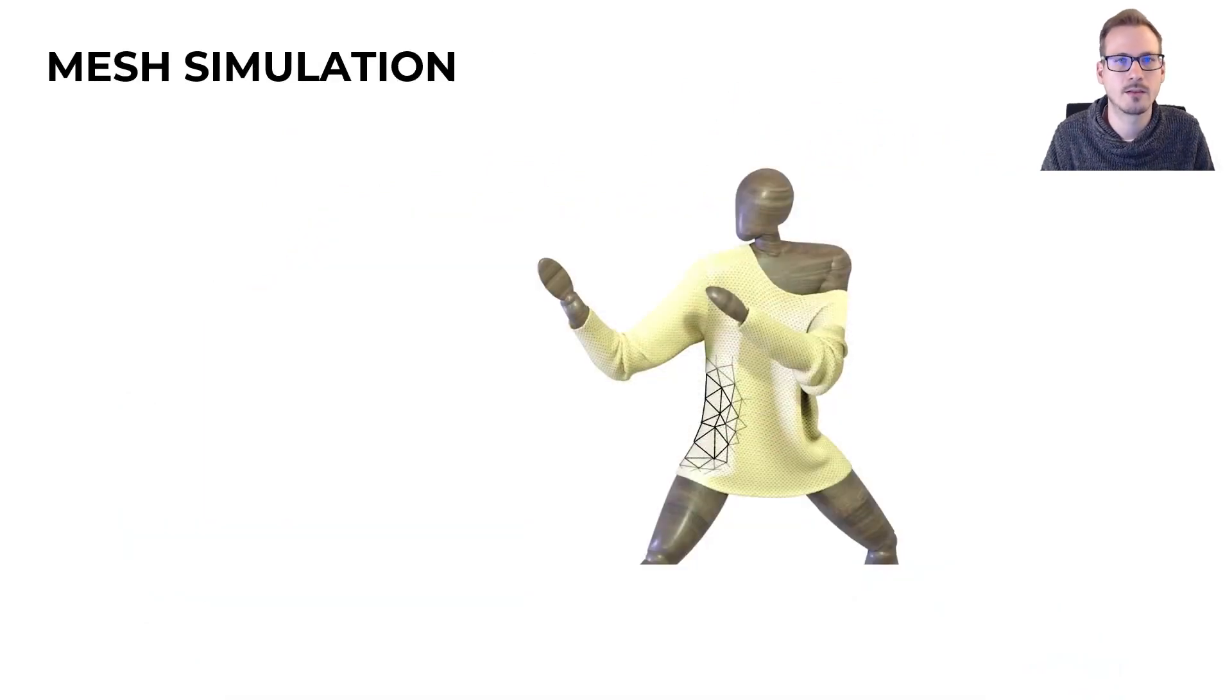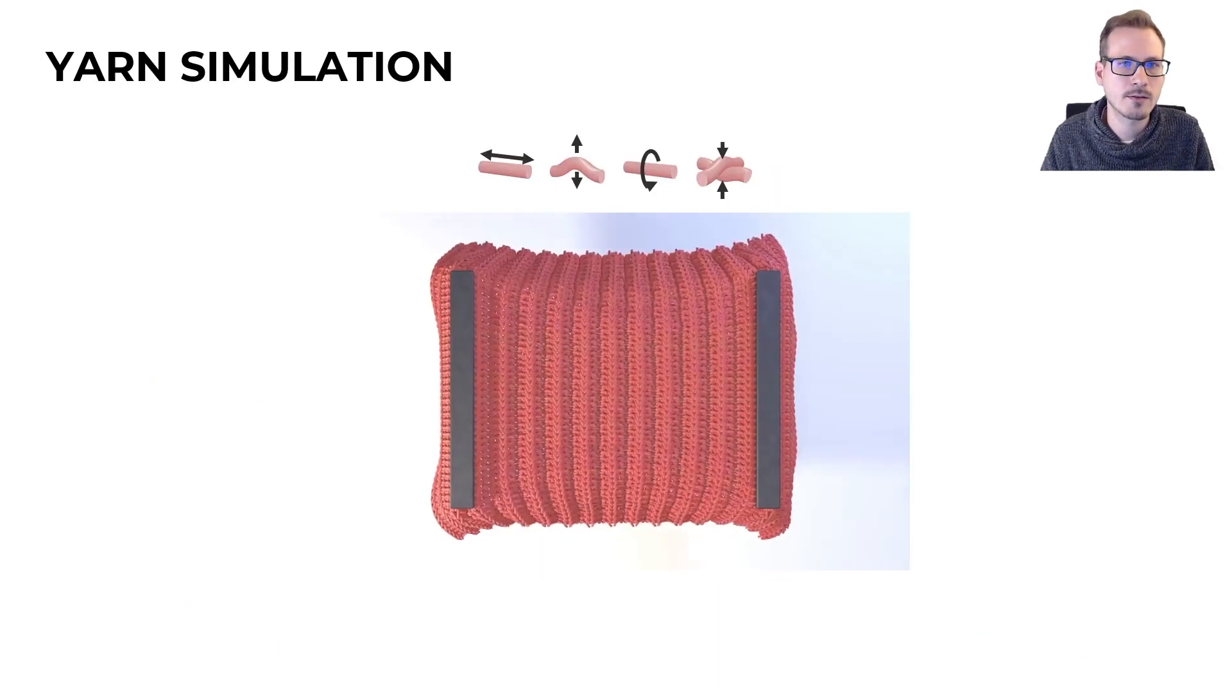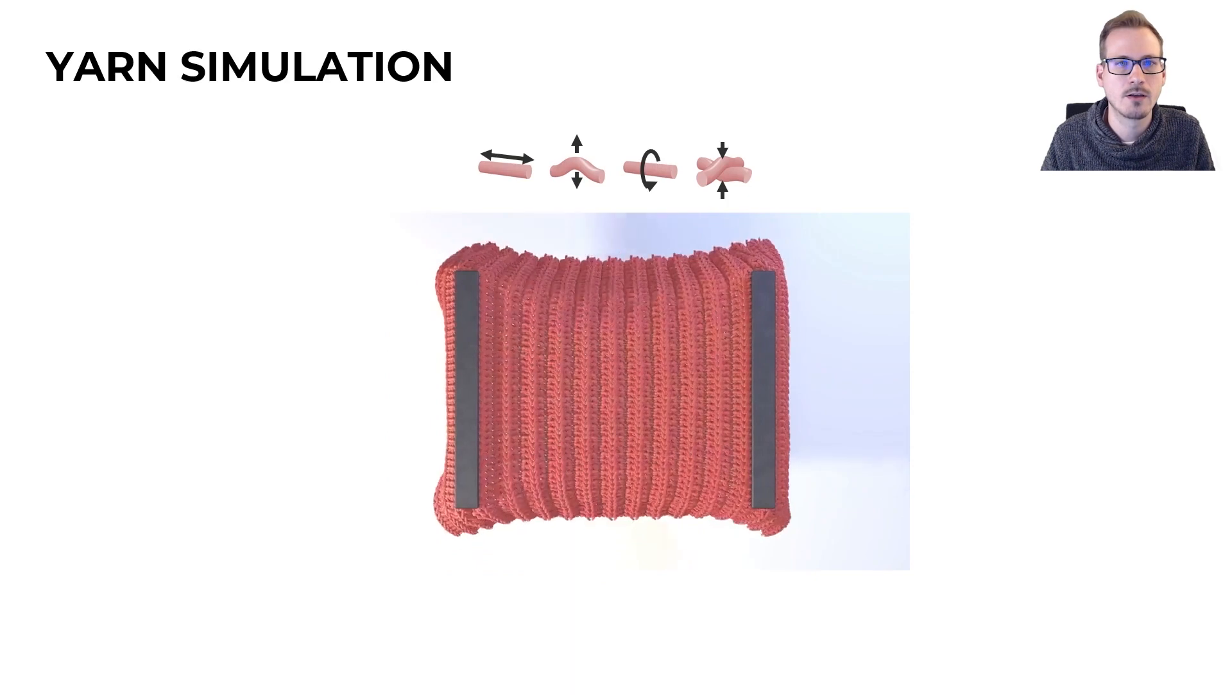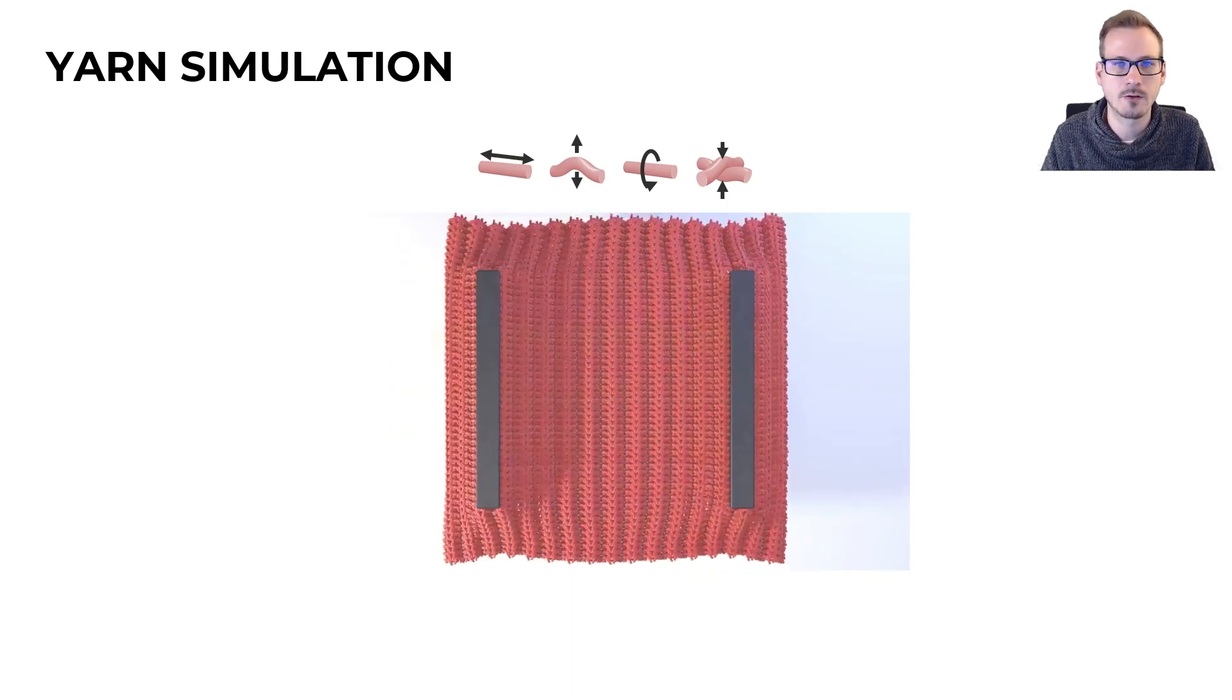Traditionally, we use meshes to simulate large cloth, but it's not easy to reproduce the behavior of any certain yarn fabric. We can instead simulate each yarn individually. This generates very realistic animations, but it may be too expensive for large garments.